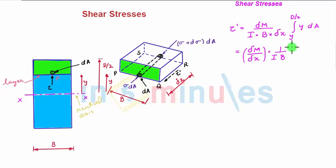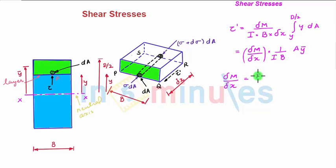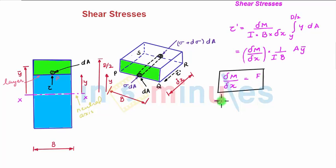We can write this first moment of the shaded area as A times y bar, where y bar is the distance of the centroid of the shaded area from the neutral axis. Now, delta M / delta x is nothing but the shear force acting on the beam at that section — a relation we studied in the chapter on shear force and bending moment. Replacing this term with shear force F, we get tau dash = F times A·y bar divided by I·b.